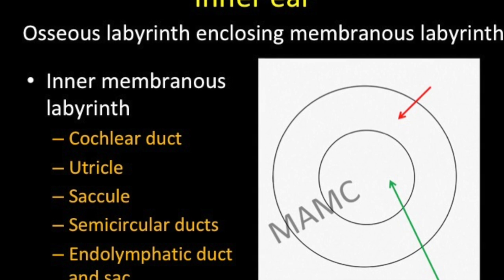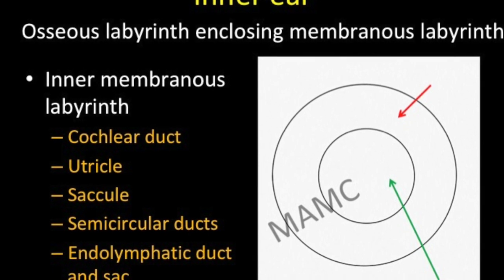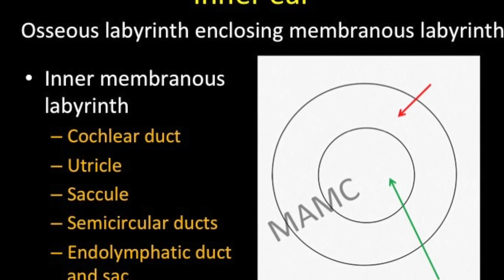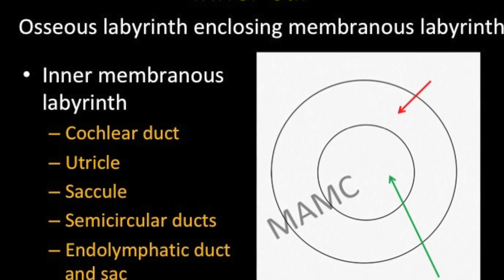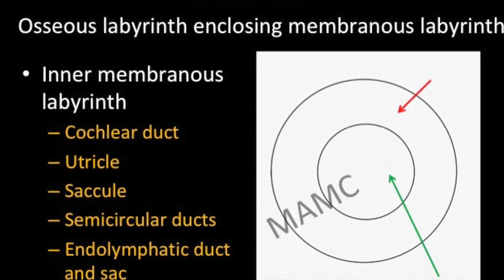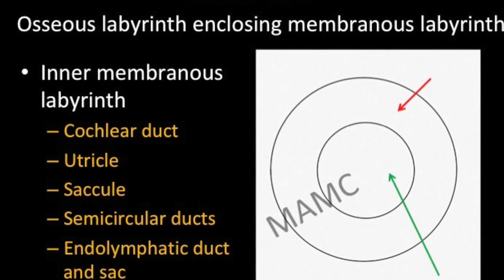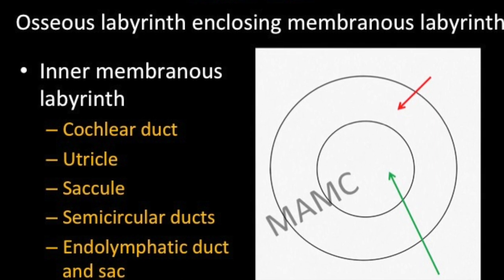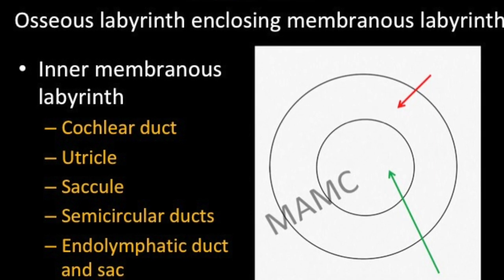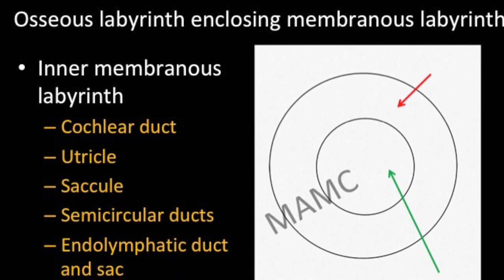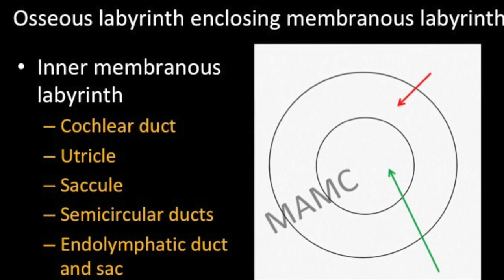These two fluids differ in their ionic compositions. Perilymph is rich in sodium and low in potassium, similar to extracellular fluid or CSF. Endolymph, on the other hand, is rich in potassium and low in sodium — the reverse of perilymph — and this ionic composition is similar to intracellular fluid, which is required for bathing and nourishing the sensory epithelium.